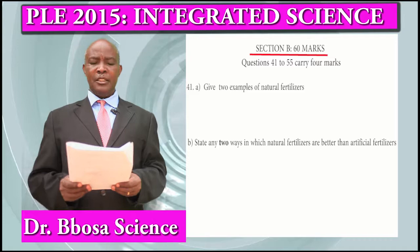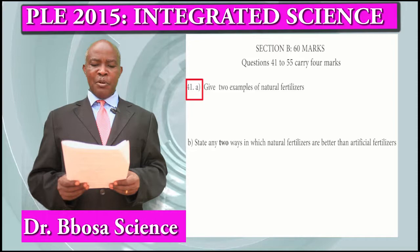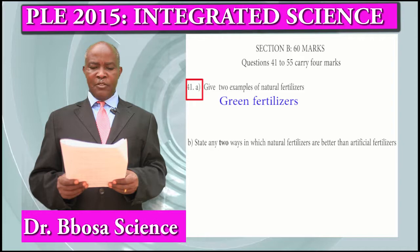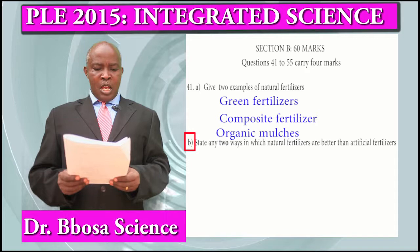Section B carries 60 marks. Questions 41 to 55 carry 4 marks each. Question 41a: Give two examples of natural fertilizers. That is green manure and compost fertilizers. You can also use organic mulches. Question 41b: State two ways in which natural fertilizers are better than artificial fertilizers. They stay longer in the soil. They are cheap. They don't require skill to apply.